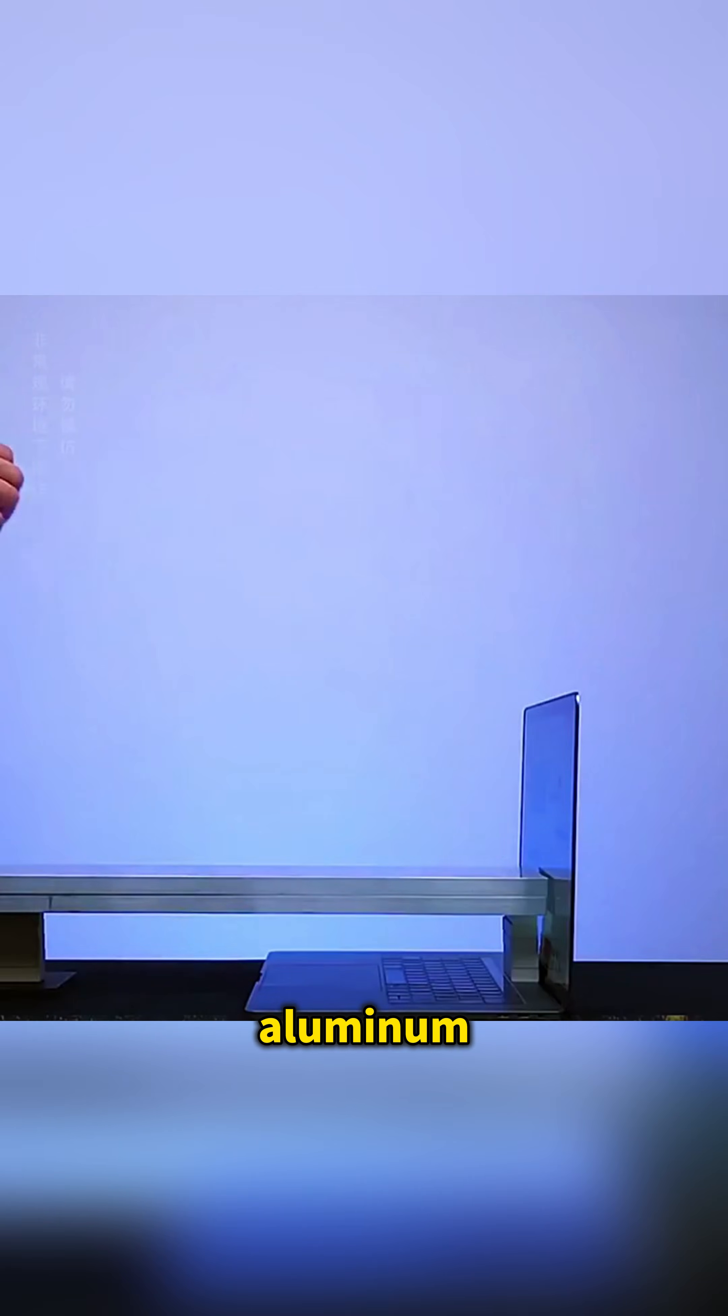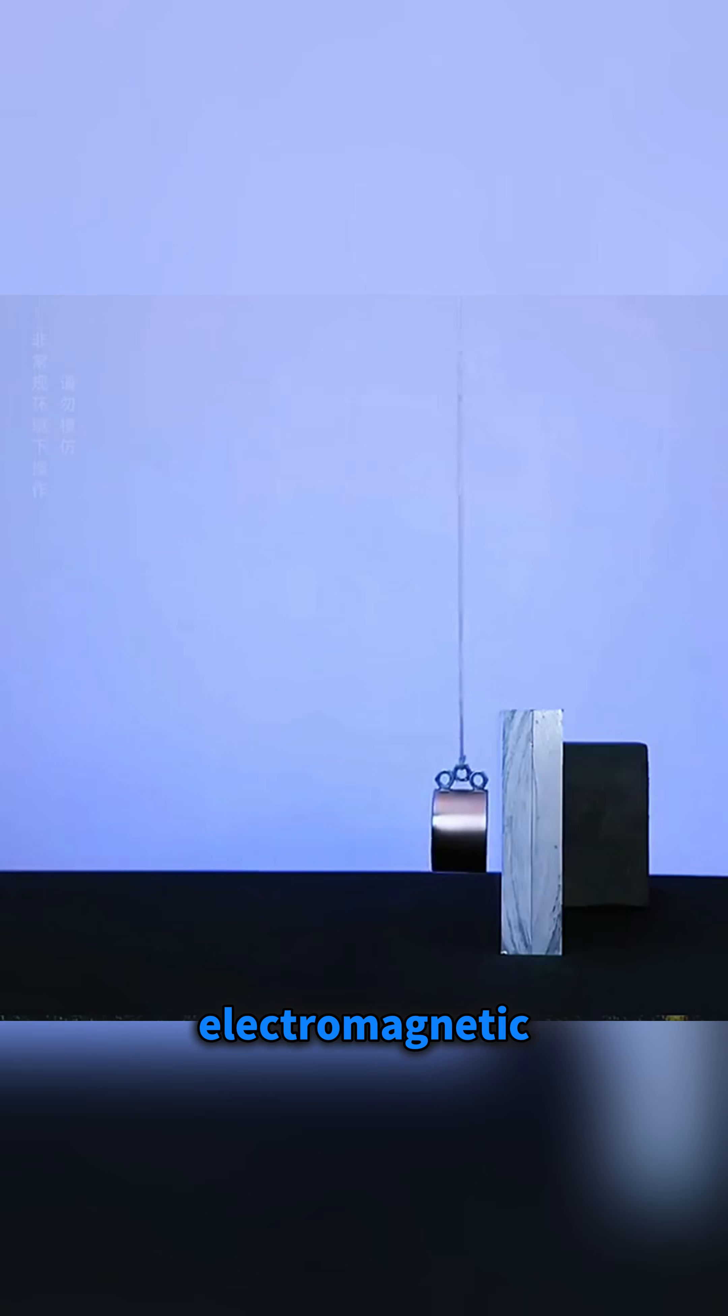Swing a strong magnet toward an aluminum notebook cover and watch as it suddenly slows and stops. As the magnet moves close, swirling eddy currents form inside the metal and act like an invisible brake, revealing the secret of electromagnetic eddy currents in a way you can actually see.